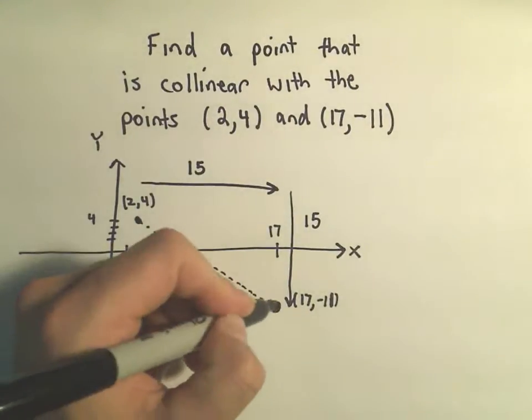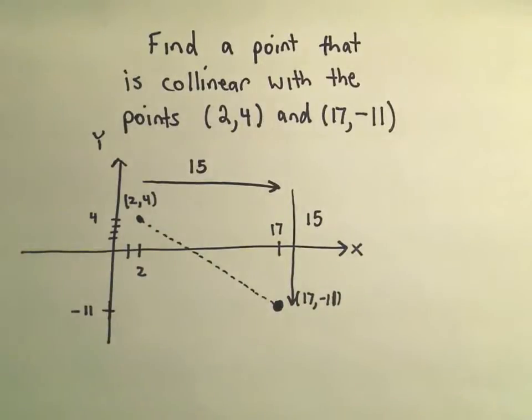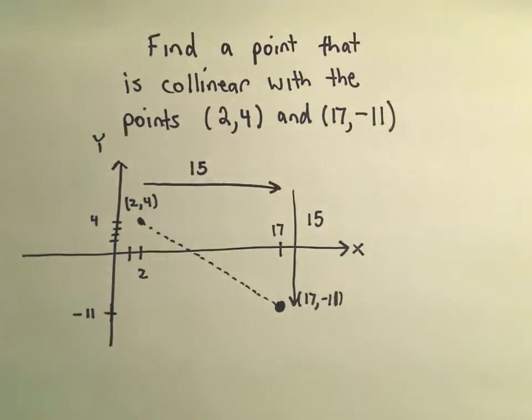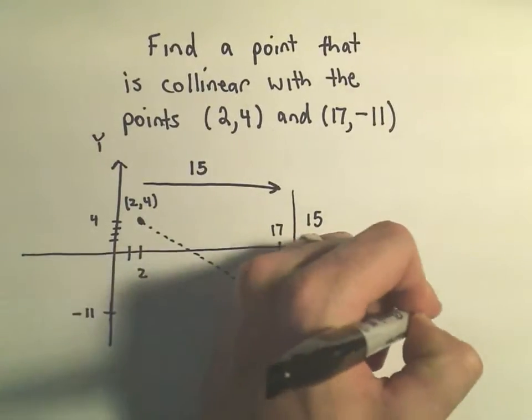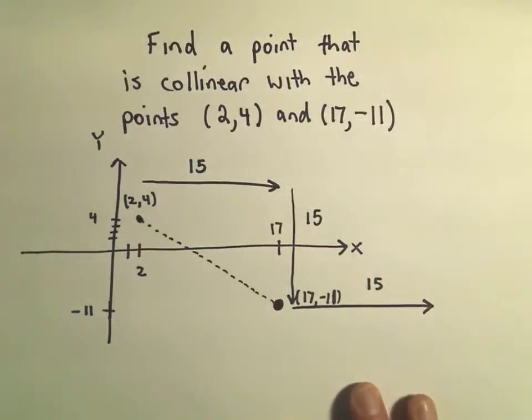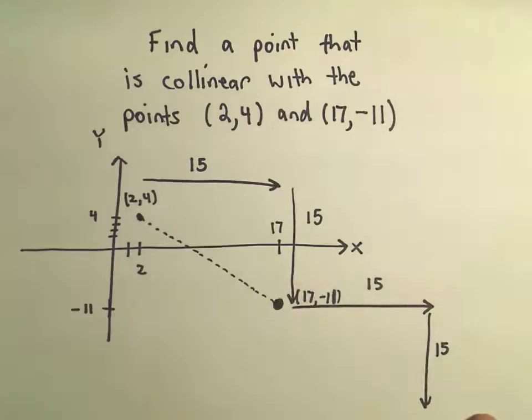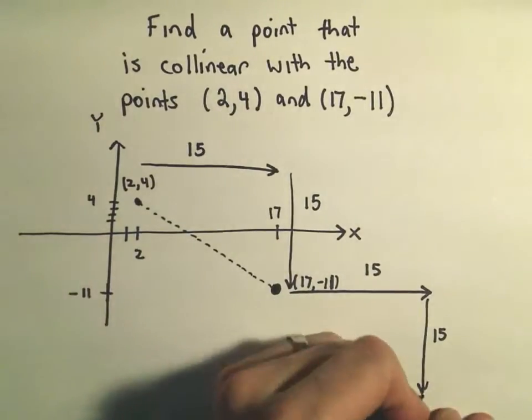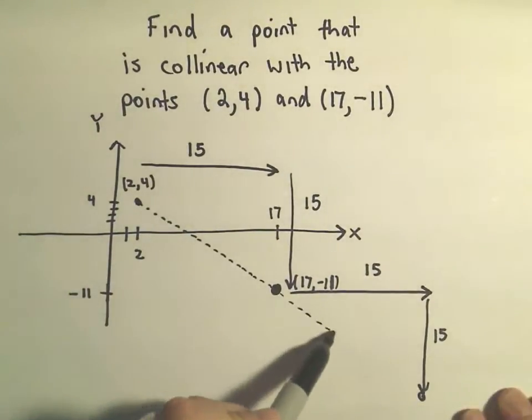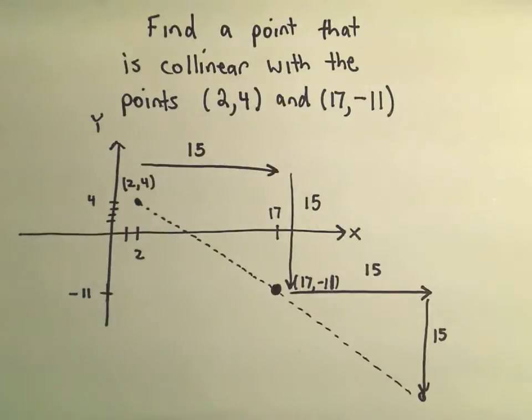To produce another point that would be collinear, we can preserve that change. The idea is, if I go 15 units again to the right and 15 units down, I'll get another point that's sitting exactly on this line and would therefore be collinear.